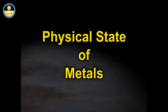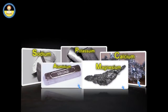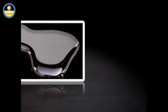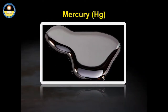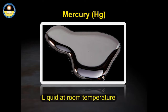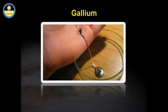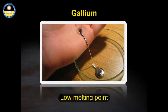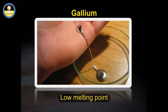Let us learn about the physical state of metals. All metals are solids at room temperature. Mercury (Hg) is the only exception — it is liquid at room temperature. Gallium has a low melting point; it melts when kept on the palm of the hand.